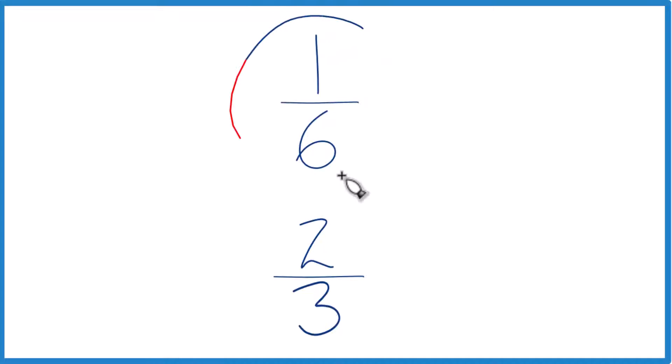Let's compare the fractions 1/6 and 2/3. You could take and divide 1 by 6, get a decimal, 2 by 3 and get a decimal, and then just compare the decimals.